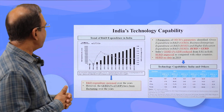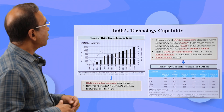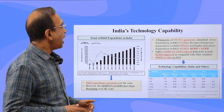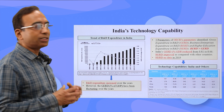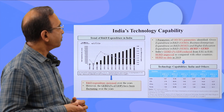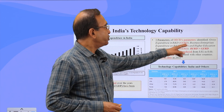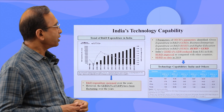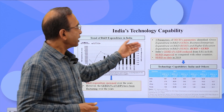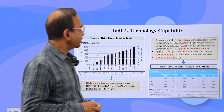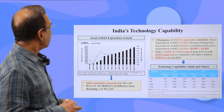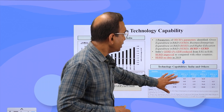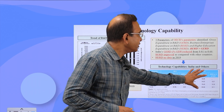Here we look at India's technological capability. OECD — the organization of developed economies — tries to understand technological capability through certain parameters: GERD (Gross Expenditure on R&D), BERD (Business Enterprise Expenditure on R&D), and HERD (Higher Education Expenditure on R&D). We can look at how India's position has changed in this table from 2011 to 2019.